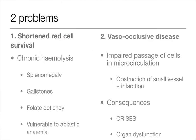Sickle cell disease has two basic problems. First, because cells are abnormal, they have a shortened survival with chronic haemolysis, leading to splenomegaly, gallstones from high unconjugated bilirubin, folate deficiency, and vulnerability to aplastic anaemia. Second, vaso-occlusive crises occur where sickled cells obstruct the microcirculation, potentially causing infarction and acute episodes with long-term organ damage.